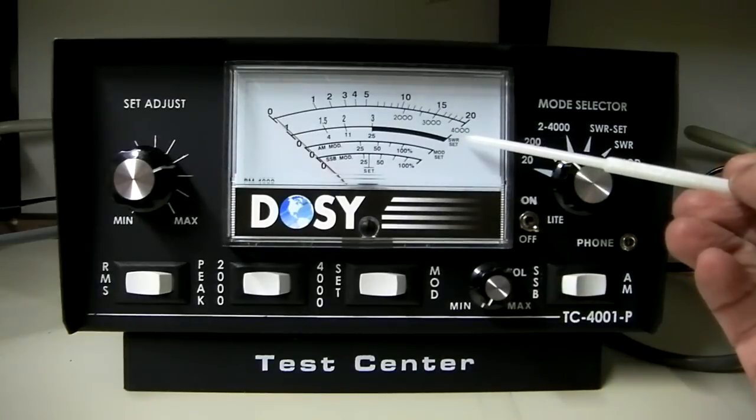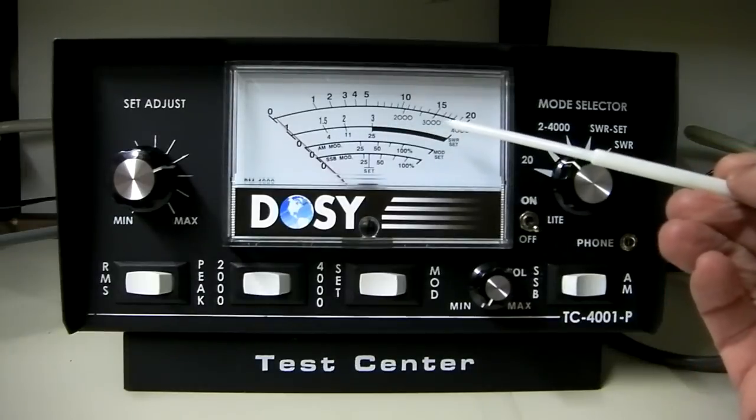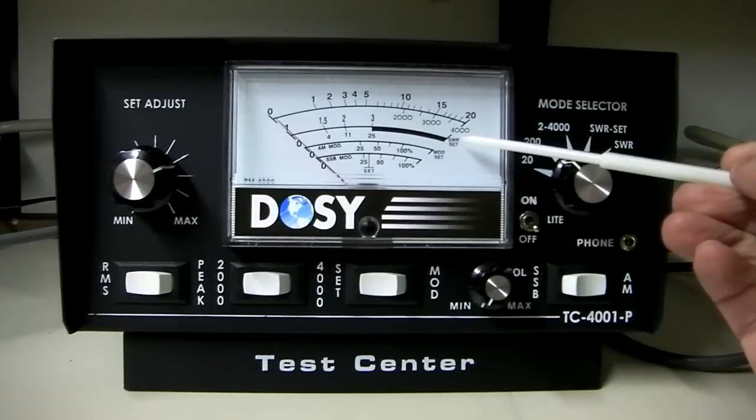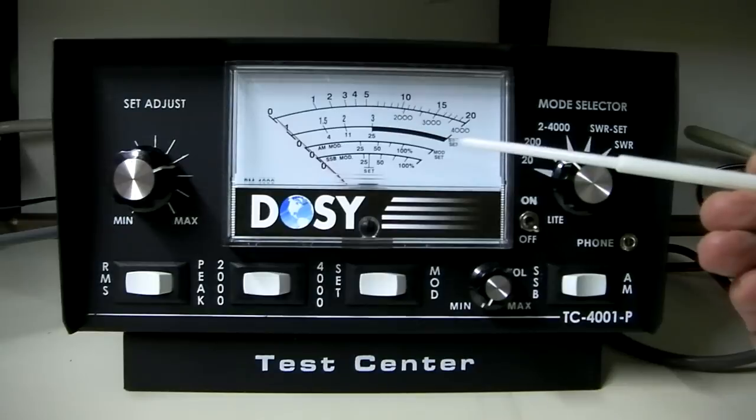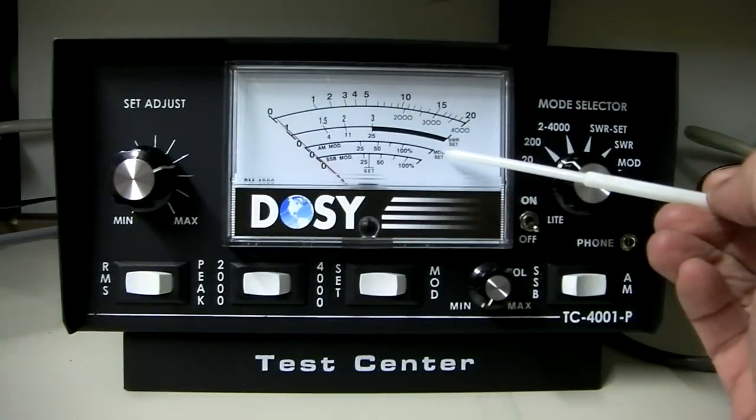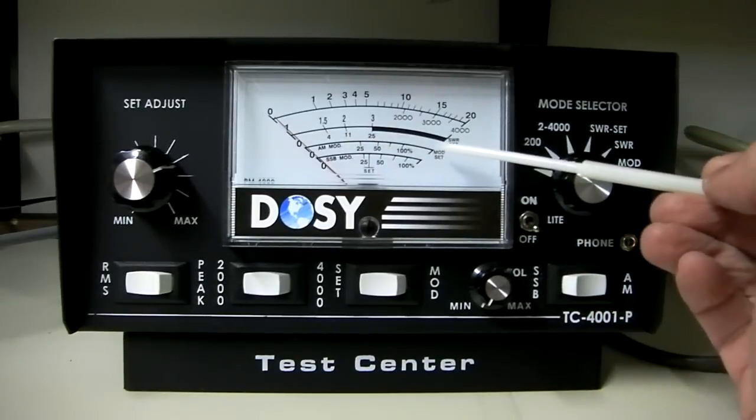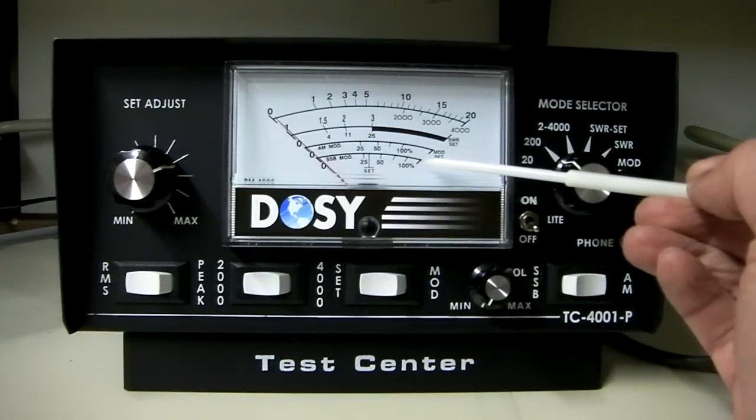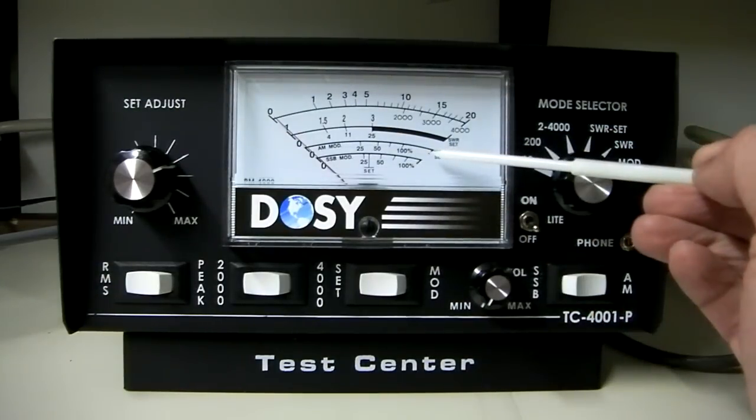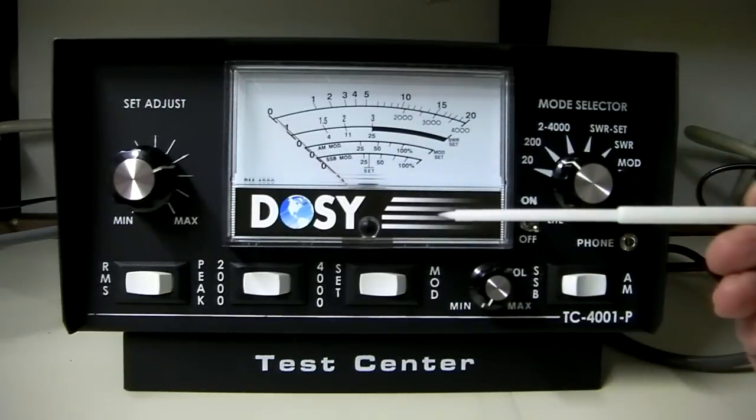Next line down is an SWR set, an SWR reading bar here. What you will do is, when you're setting your SWR, you'll get the needle to go over to the SWR set position, and then when you flip it over to measure your SWR, it'll show it here on the scale 1, 1.5, 2, 3, etc. Just below that is a mod set. This is your modulation set for AM modulation, and when you're checking your AM modulation, you have to set it, and then it'll show you your percentage. You can do the same thing with your single sideband modulation. You can set it here, and then it shows the modulation. So different set points on this for different things, SWR modulation and single sideband modulation.